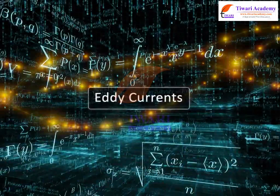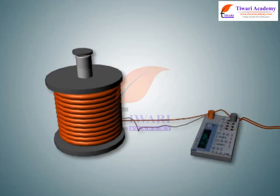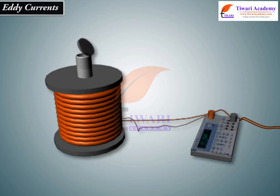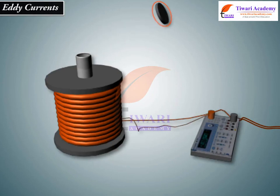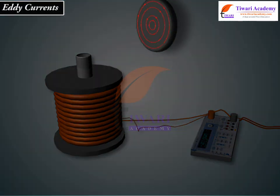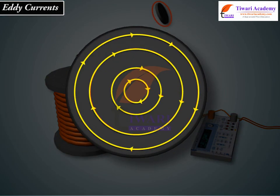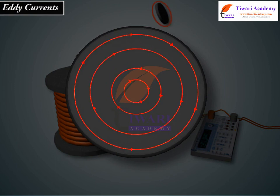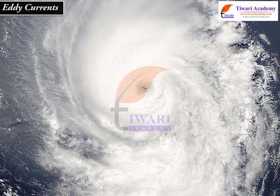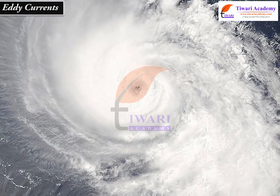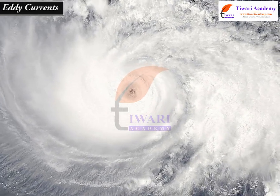Eddy Currents. When current is induced in a conductor, such as a piece of metal, the induced current often flows in small circles that are strongest at the surface and penetrate a short distance into the material. These current flow patterns are thought to resemble eddies in a stream, which are the tornado-looking swirls of the water that we sometimes see.